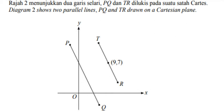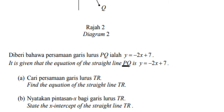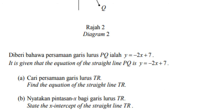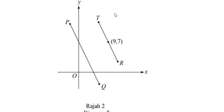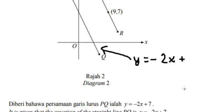Hello everybody. Today I will talk about algebra — the topic is about parallel lines. We have two parallel lines: line BQ has the equation y equals negative 2x plus 7. The question asks us to find the equation of the straight line TR.